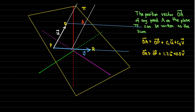To get to point A, I would first start at the origin, go to point P, and then take 1.2 times vector U and half of vector V, and I will arrive at point A.